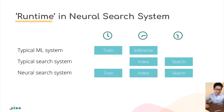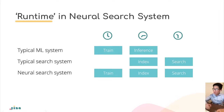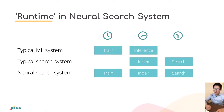Another key difference: for traditional machine learning systems there are two runtimes — train and test/inference. For a typical search system there is an index runtime and a search runtime. But for a neural search system, because it is based on deep learning, there are three runtimes: train, index, and search. This is another major difference between neural search and traditional search.